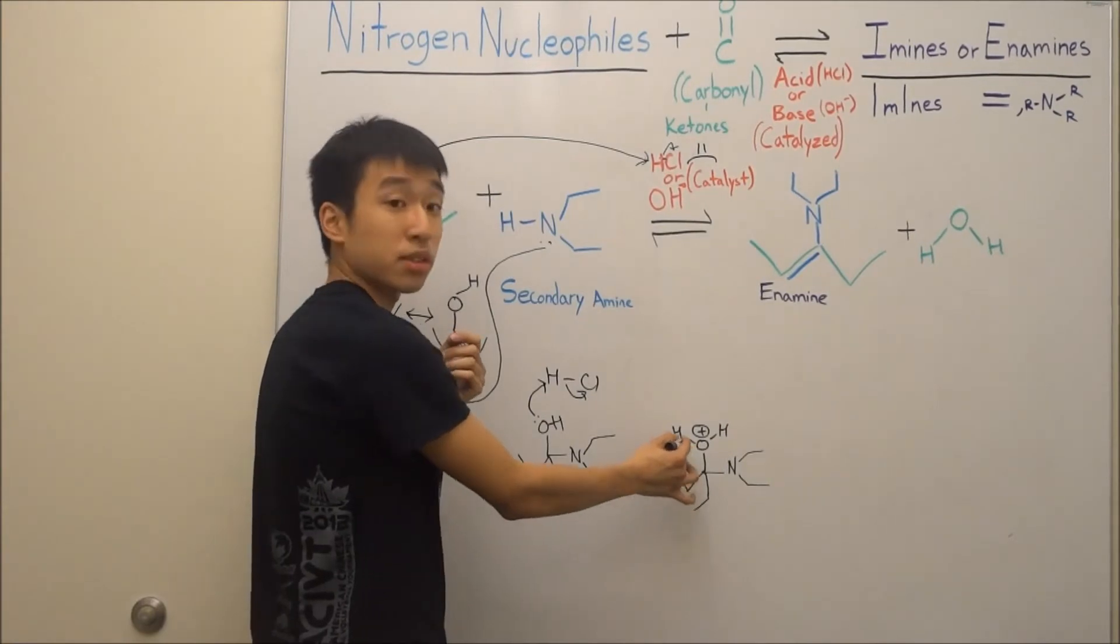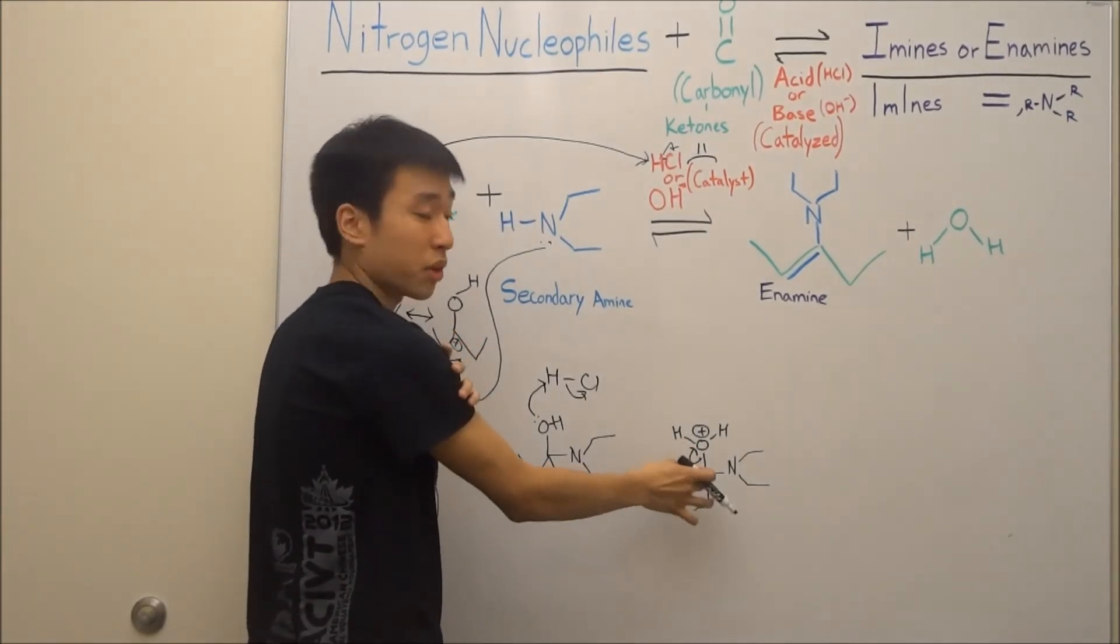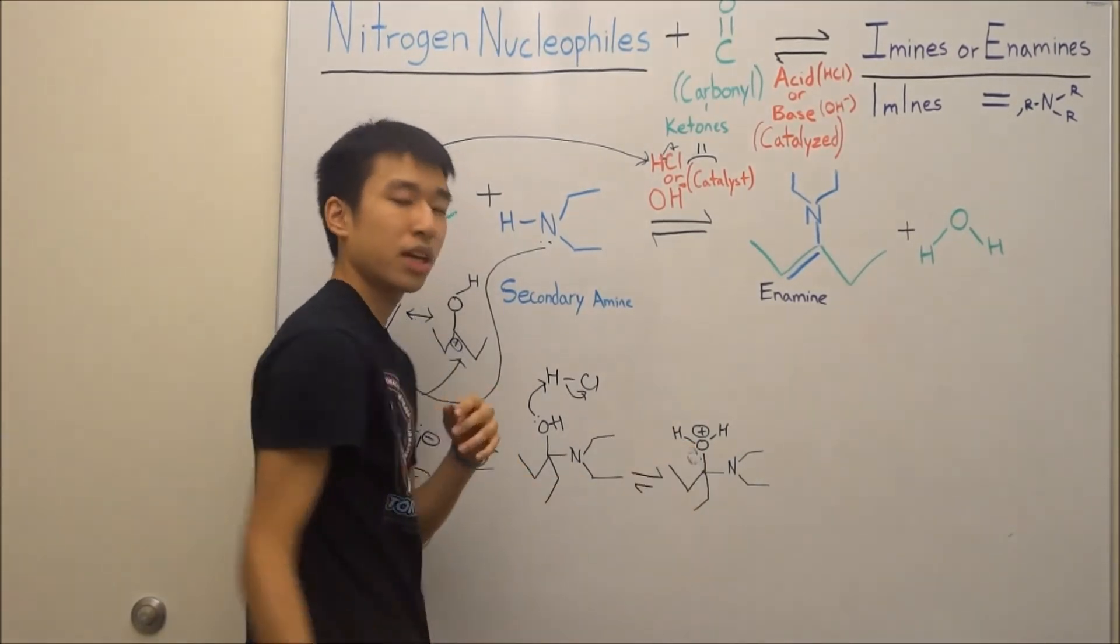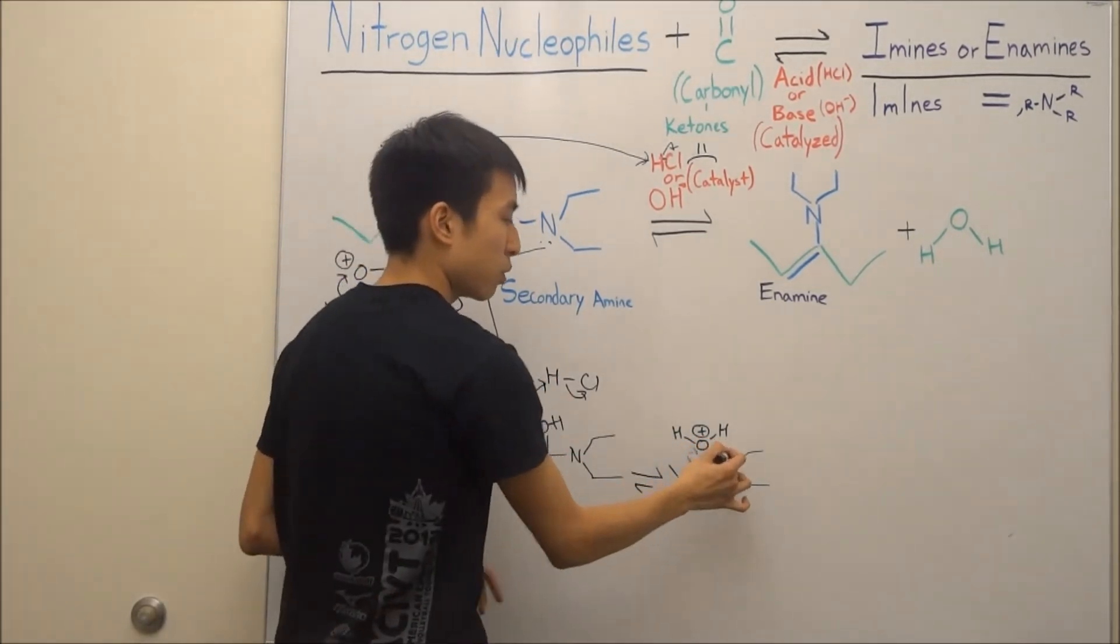Alright, we can't just do this, because if we just do that, we're going to get a carbocation in our carbon, so that's no good. Something has to motivate that move. And what that something is, is the lone pair on nitrogen.